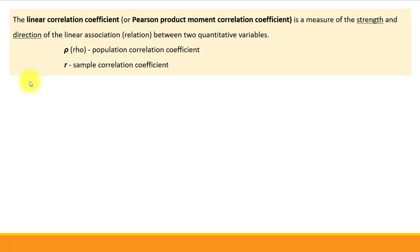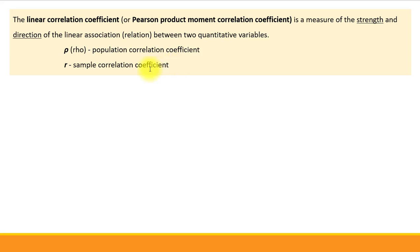Let's start with the formal definition. The linear correlation coefficient — another name is Pearson product-moment correlation coefficient — is a measure of the strength and direction of the linear association between two quantitative variables. We can compute it for a population, denoted by the Greek letter rho, or compute a sample correlation coefficient, which happens more often since we work with samples more often.